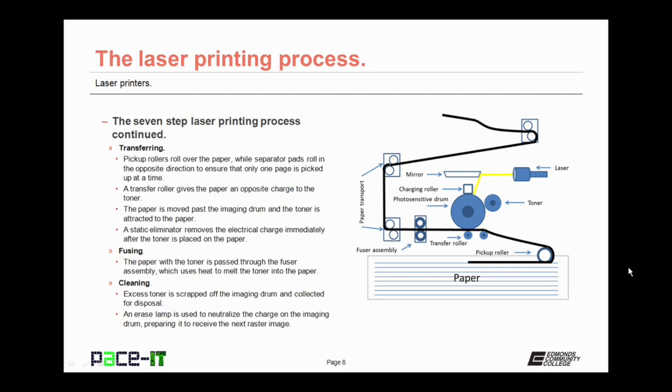Step five is the transferring process. During this process, pickup rollers roll over the paper while separator pads roll in the opposite direction to ensure that only one page is picked up at a time. While the transfer roller is rolling over the paper, it gives an electrical charge opposite to that of the toner to the paper. The paper then moves past the imaging drum and the toner is attracted to the paper. It actually kind of jumps to the paper. As soon as that happens, a static eliminator removes the electrical charge that was on the paper and we're on to the fusing process.